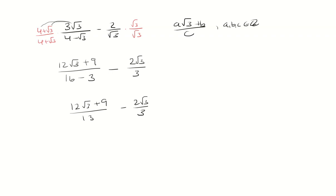We need to get a common denominator, so I'm going to multiply the first fraction by 3 over 3, second fraction by 13 over 13, so the 3 will distribute. 3 times 12√3 is 36√3, 3 times 9 is 27, 3 times 13 is 39, and then this is 26√3 over 39.